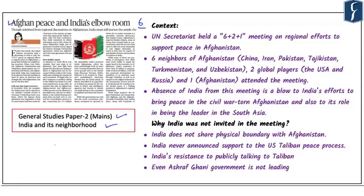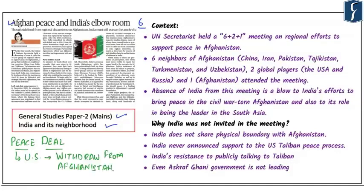The US has recently got into a deal with the Taliban to ensure a peace process between the Taliban and the Afghanistan government. One primary benefit is that the US will be able to withdraw from Afghan soil. However, it is generally understood that the US entered this deal in a hurry to withdraw, and essentially imposed the peace deal on the Ashraf Ghani government. It also seems plausible that the Taliban would be the ultimate winner in this entire scheme of things.